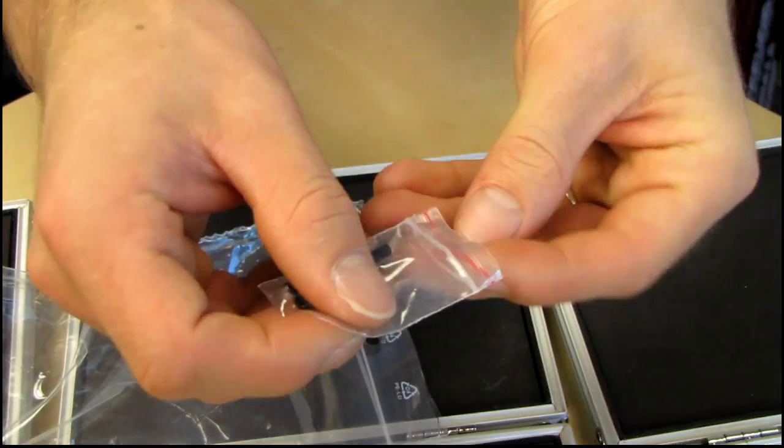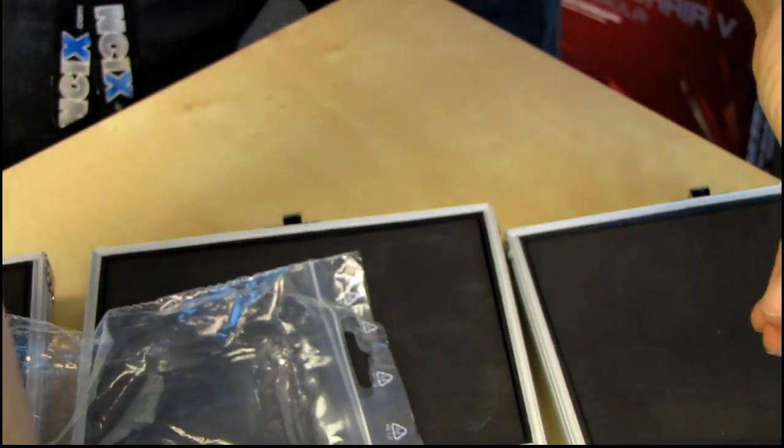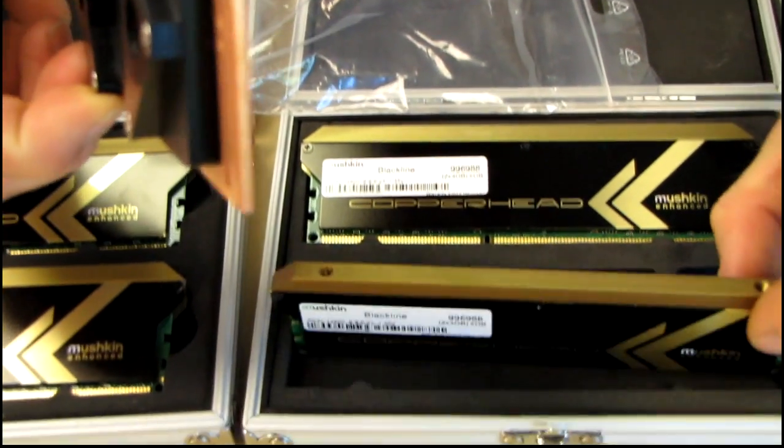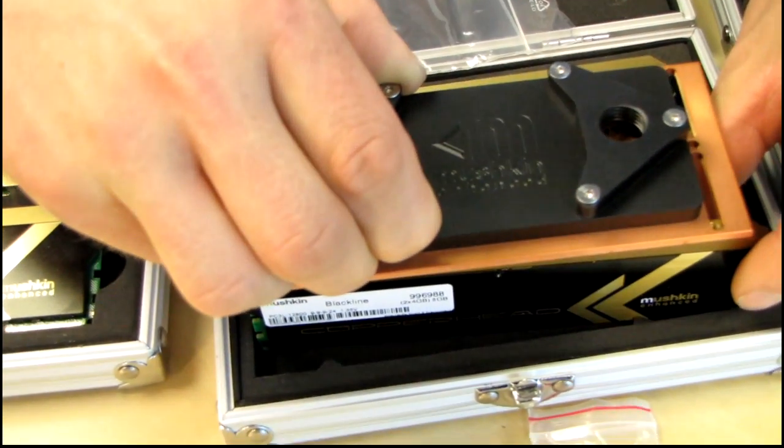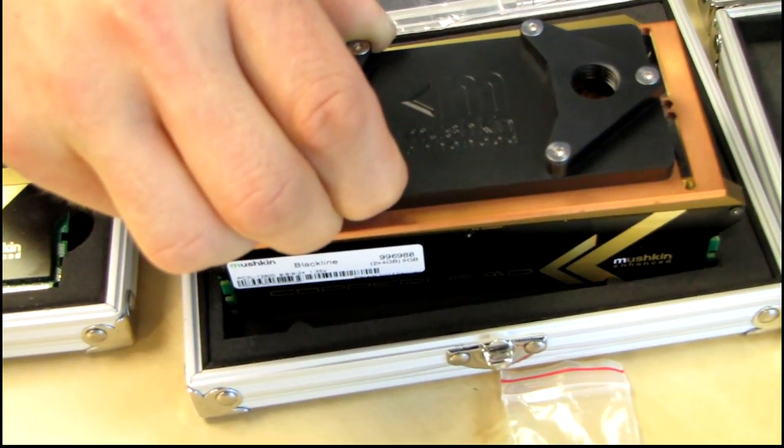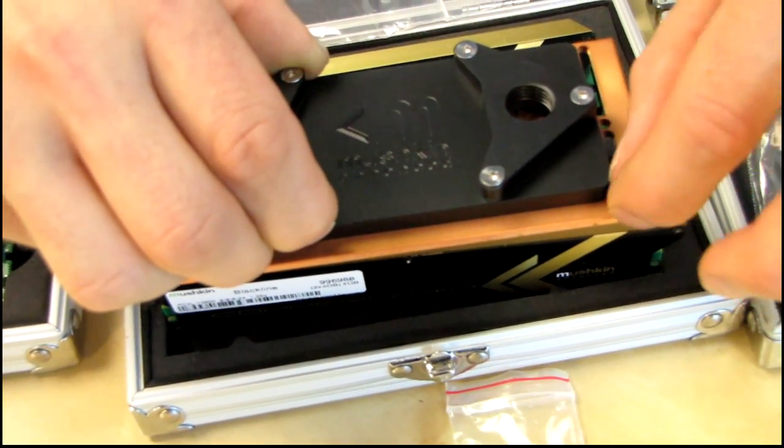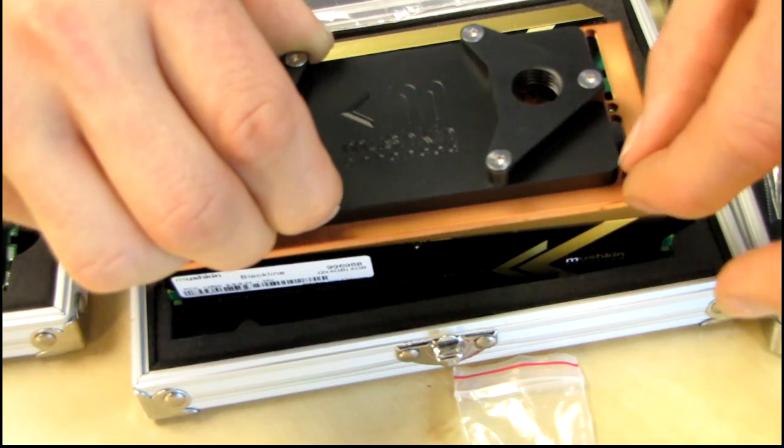But wait, there's more. You take the Copperhead Water Block. We've got our screws here. Position it over top of a Copperhead memory module. And you can actually screw in any number of Copperhead modules, whether it is three or four. I think four is the max. And you screw that in.